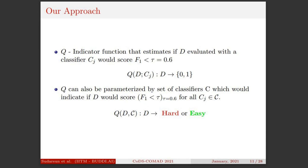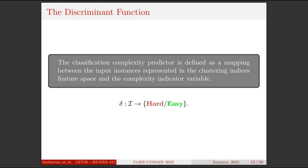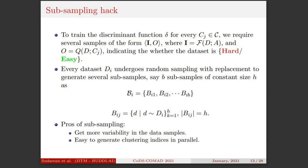Let Q be an indicator function that determines if a dataset is hard or easy to classify. The function Q determines if the dataset is hard over a given set of classifiers, meaning it checks whether at least one among the set of classification algorithms tried over the dataset was able to score a classification performance greater than 60%. We frame our hypothesis as a classification problem. We try to determine if a dataset is hard to classify or not using a classification complexity predictor. Here, the predictor is a mapping between the clustering indices of a dataset and its classification complexity. More formally, this classification complexity predictor is a mapping from clustering indices I to the classification complexity indicated in terms of hard or easy.